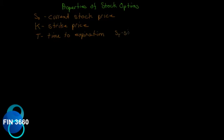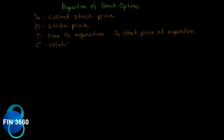S-sub-T is the stock price at expiration. If S-naught is the current stock price and T is the time to expiration, then S-sub-T is the stock price at expiration. Here's a new one: sigma — volatility. We're going to see that volatility is one of the most important variables for a trader of options to understand.